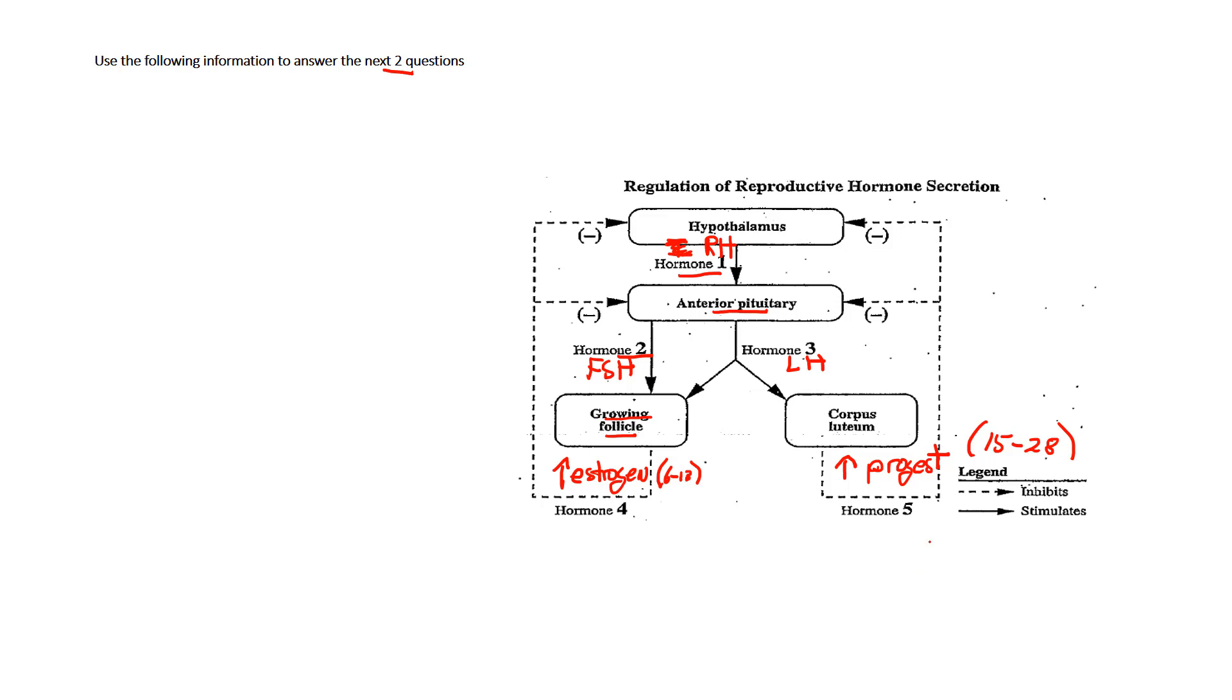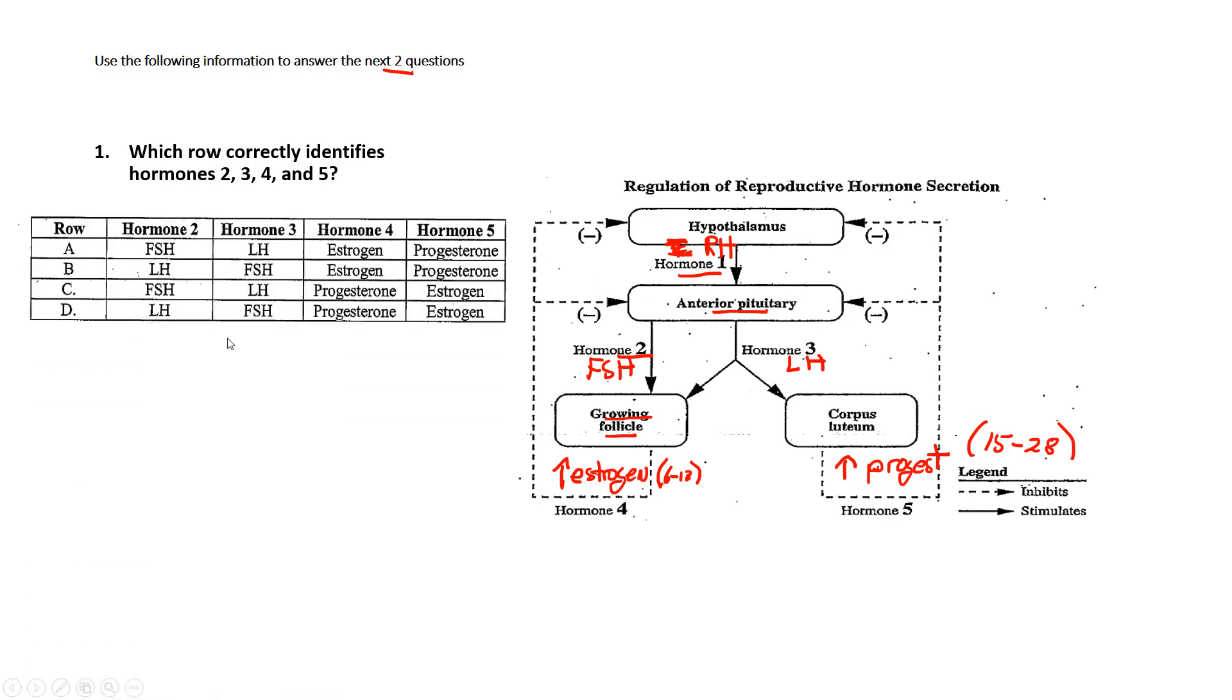Once we fill out that diagram, providing we worked with some of the flow charts and strategies we looked at in previous videos, let's look at the question. Which row correctly identifies hormone 2, hormone 3, hormone 4, and hormone 5? We've already done that by filling this out. Now all we have to do is match those.